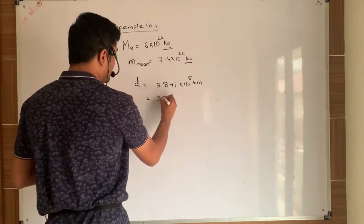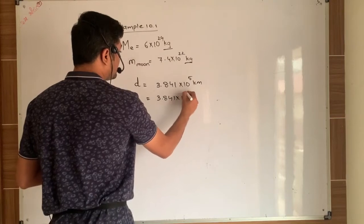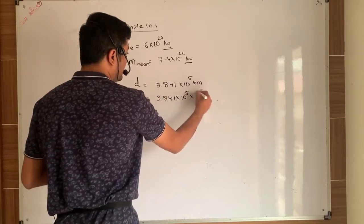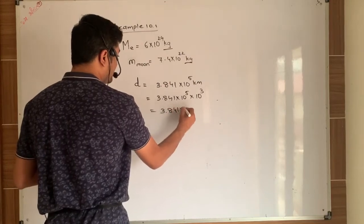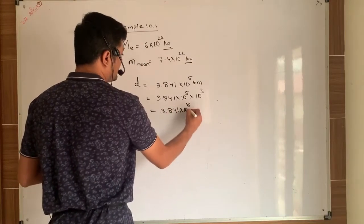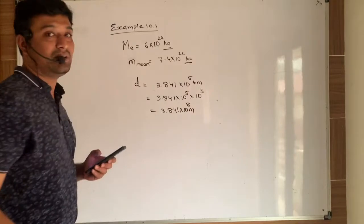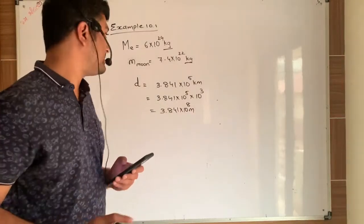As we all know that one kilometer is 1000 meters. So I will multiply it with 10 raise to 3. So finally distance will be 3.84 into 10 raise to 8 meter. So now distance is in SI unit.